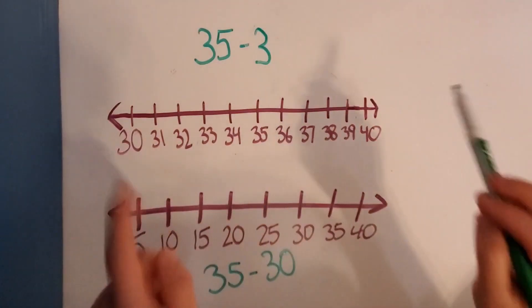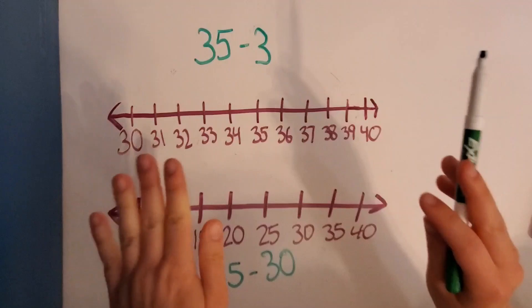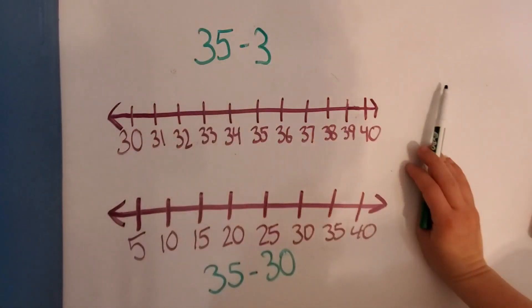This one is by 1's. This one is by 5's. Alright. So let's start off with this one, 35 minus 3.